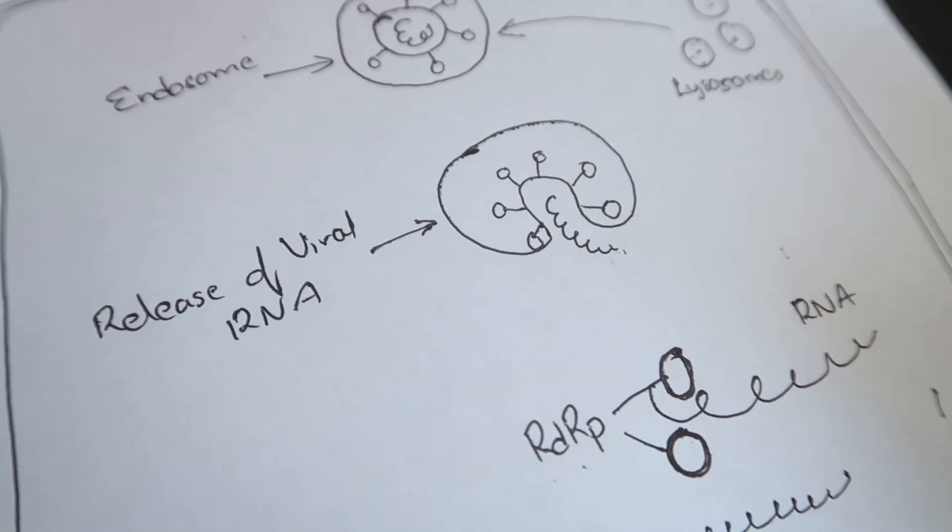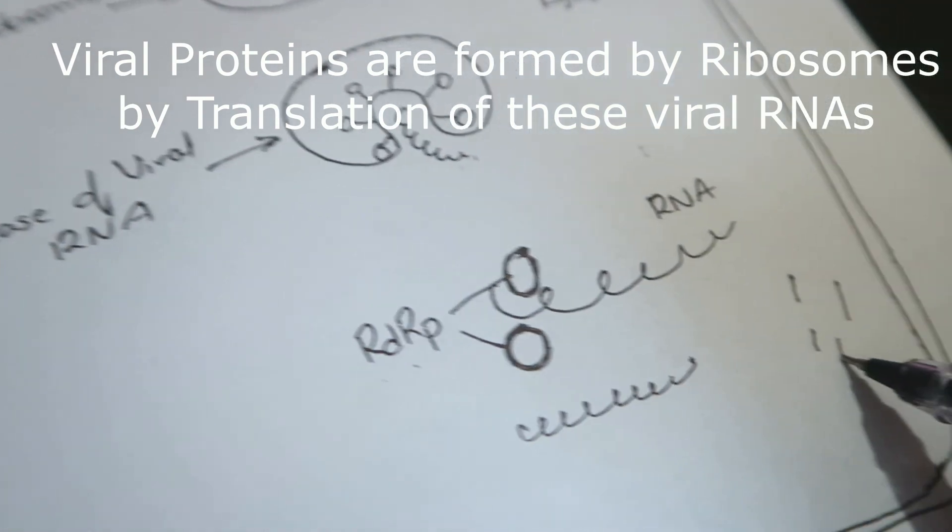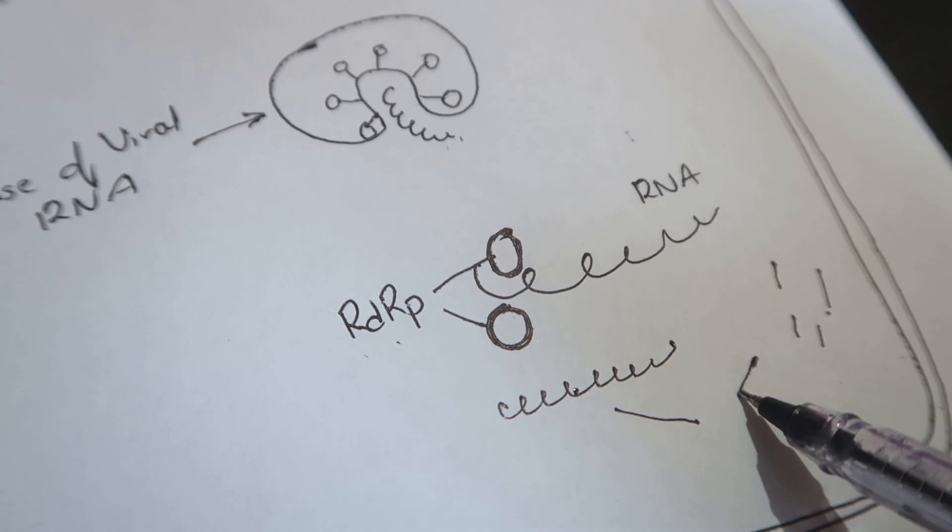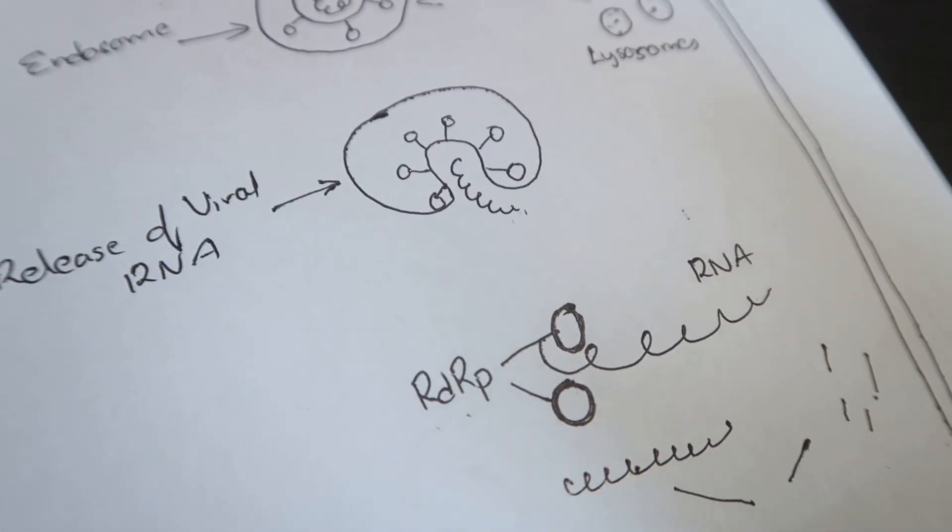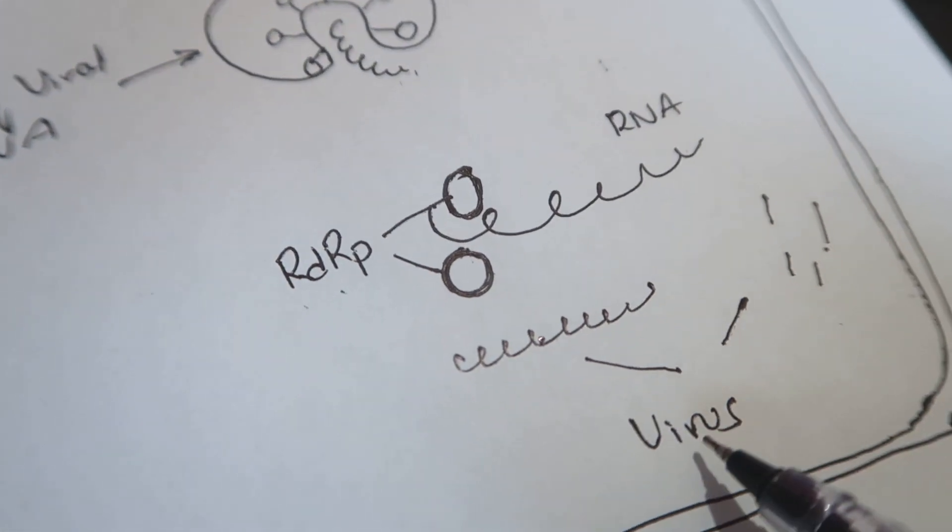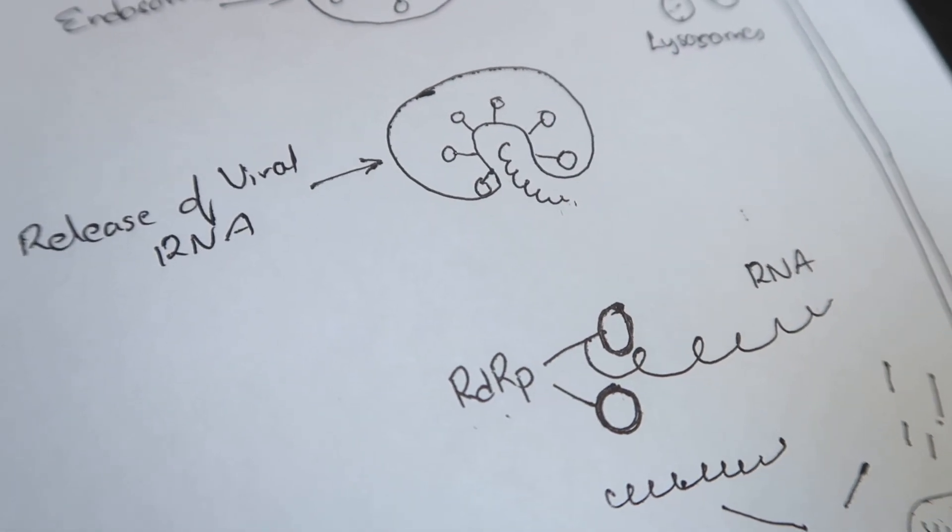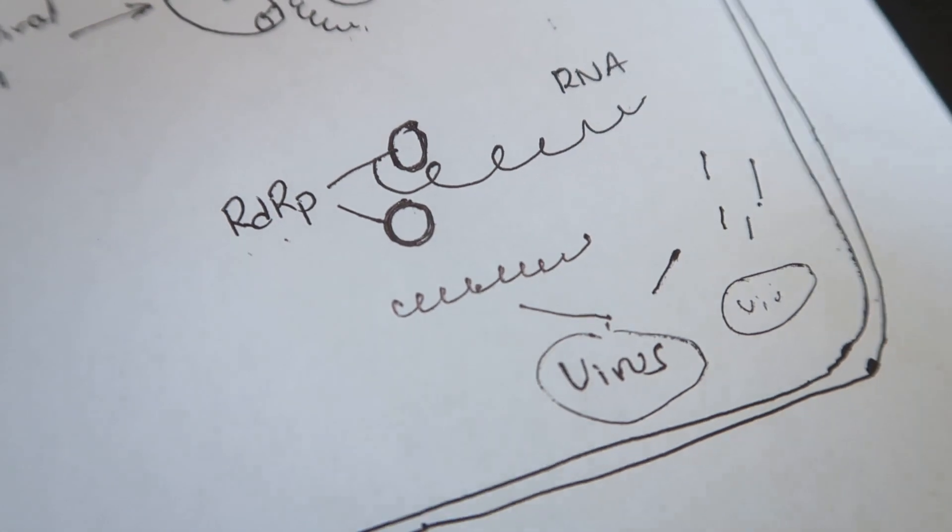They will also make some viral proteins. If you combine the viral RNA with the viral proteins, they will form a complete virus, a complete coronavirus. That's how the virus replicates inside our cell. These viruses will form multiple copies and burst out of the cell, killing the host cells.